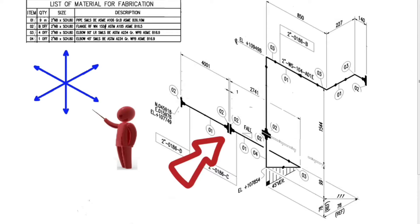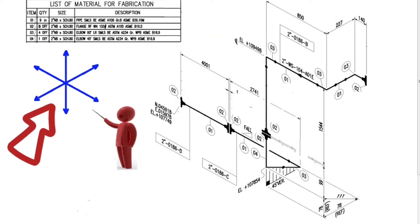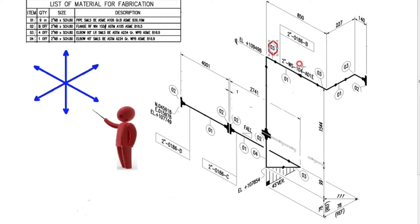This is the pipe isometric. This is the list of materials on the drawing. These are the directions. Let's find out the materials needed during the fabrication of this pipeline. These are the detail numbers of the materials on the drawing.